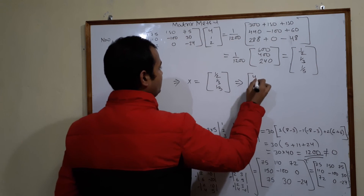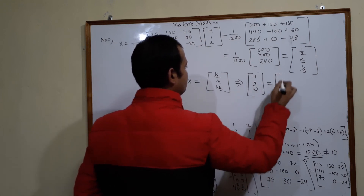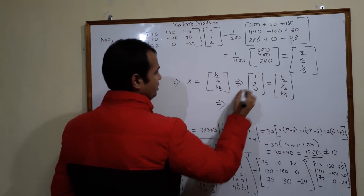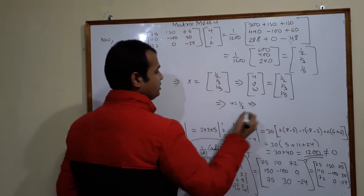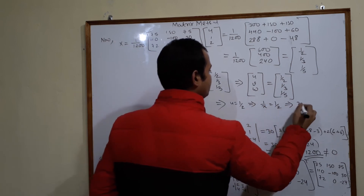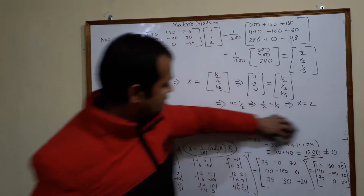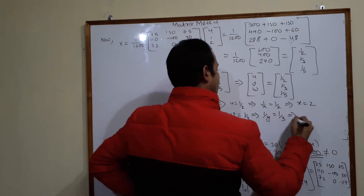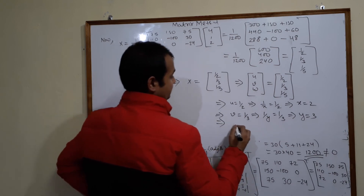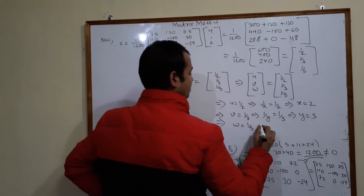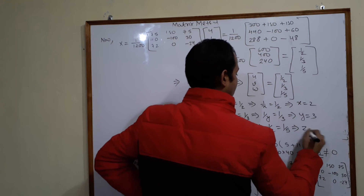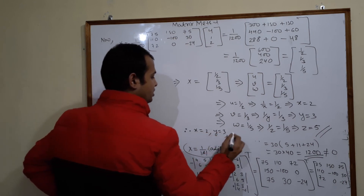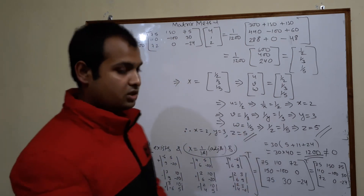This implies u = 1/2, meaning 1/x = 1/2, so x = 2. Then v = 1/3 implies 1/y = 1/3, so y = 3. Then w = 1/5 implies 1/z = 1/5, so z = 5. Therefore x = 2, y = 3, and z = 5. This completes the solution.